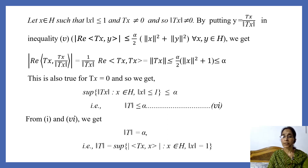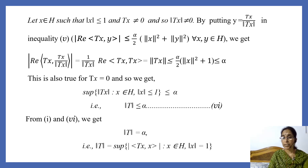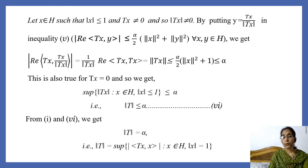From inequality (1) we have α ≤ ‖T‖, and from inequality (6) we have ‖T‖ ≤ α. Combining both, we get the equality ‖T‖ = α, that is, ‖T‖ = sup{|⟨Tx,x⟩| : x∈H, ‖x‖=1}. This completes the proof. Thank you.